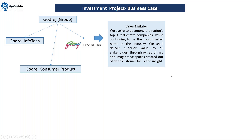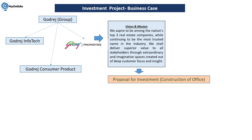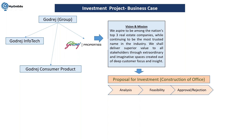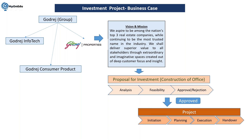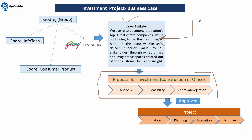Some manufacturing companies won't immediately go for construction work because manufacturing is a separate line. For Godrej Properties, based on their vision and mission, they have a proposal to construct their own office. This proposal goes for analysis, then feasibility, then approval or rejection; if approved, it goes for execution. This portion we are going to cover in investment management. If you want to cover vision, mission, and innovation management, that is a separate module or can be managed in PPM.